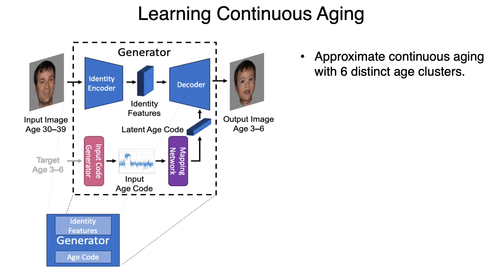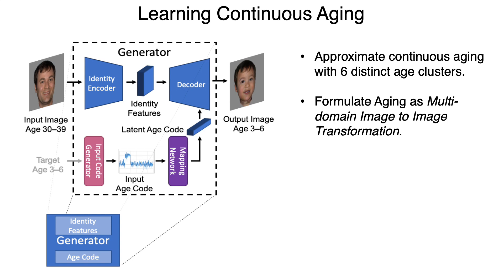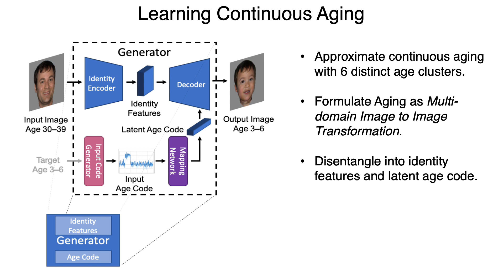We achieve this by approximating continuous ageing with six different age clusters. We then formulate the problem as a multi-domain image-to-image transformation, disentangling the image into identity features and a latent age code. We can then interpolate between the latent codes to achieve continuous ageing.